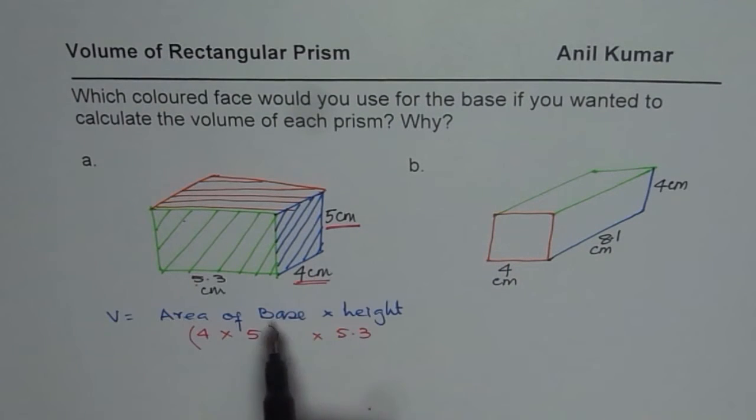So in this kind of question what we are trying to say is that whenever you have a choice, select the base which has numbers easy to multiply. So 4 times 5 is a number easy to multiply. We will take that as our base.